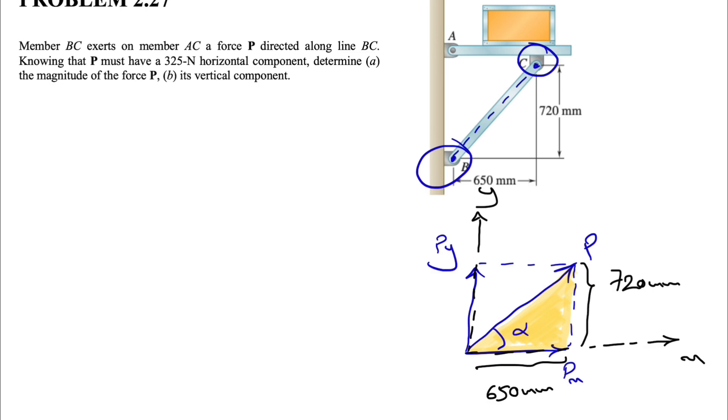Before that, let's just find the hypotenuse of this right triangle. We know that the hypotenuse, which is BC squared, will be 720 squared plus 650 squared. Our BC will be the square root of 720 squared plus 650 squared, and this would give us 970 millimeters.